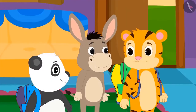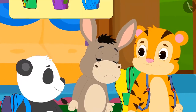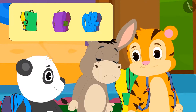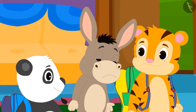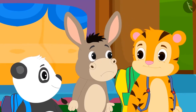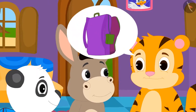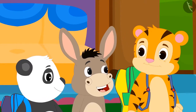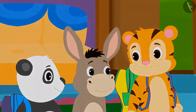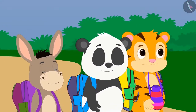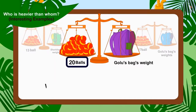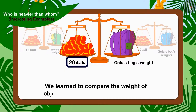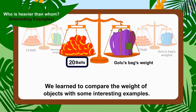Uncle taught the children to compare the weight of items using a weighing balance. Finally, Sheer Khan and Golu realized that Bhola's bag was indeed heavier than their bags. Knowing this, Sheer Khan and Golu told Bhola that they would carry his bag for some distance to help him. Children, you must always help your friends too. In this video we learnt to compare the weight of objects. In the next video we shall see some misconceptions that students make.